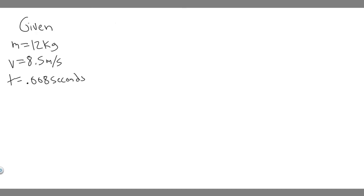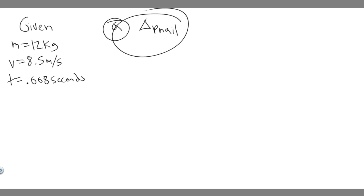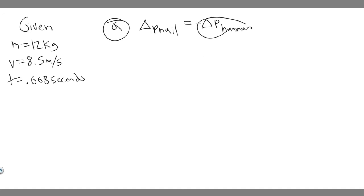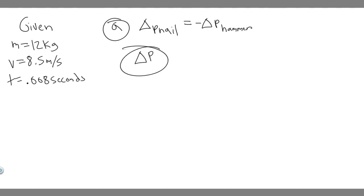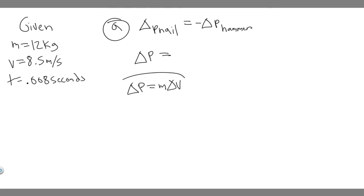Now let's go ahead and solve for Part A. We're trying to find the impulse given to the nail. When they say impulse, they're talking about the change in momentum. The change in momentum of the nail is going to be equal to the opposite of the change in momentum of the hammer, because the momentum is changing from one object to the other. So we need to solve for delta P. We know that momentum P equals mass times velocity, and the change in momentum is delta P equals M times delta V.